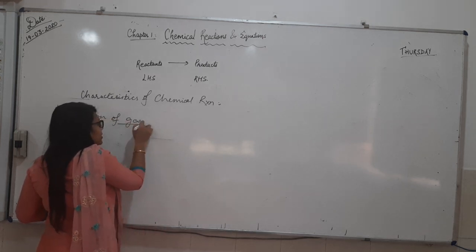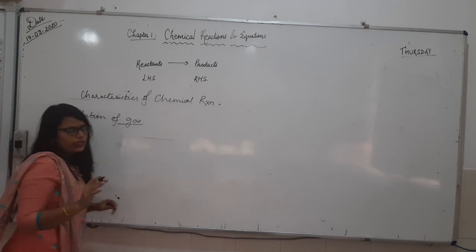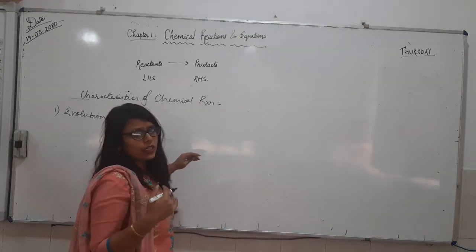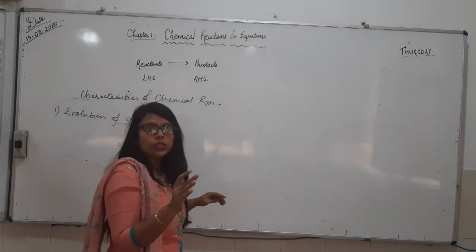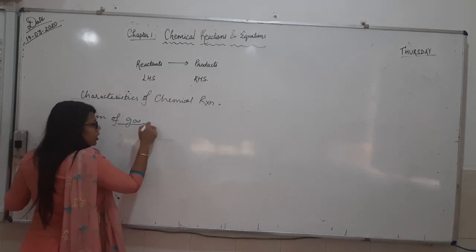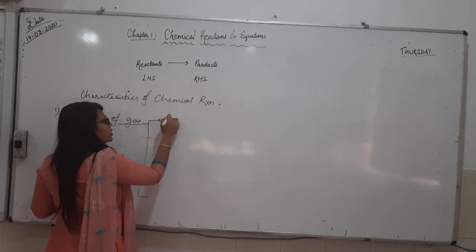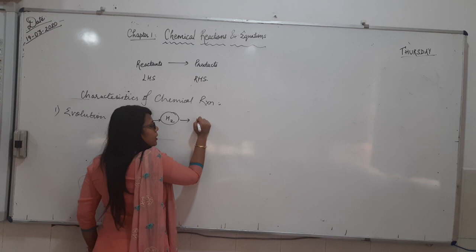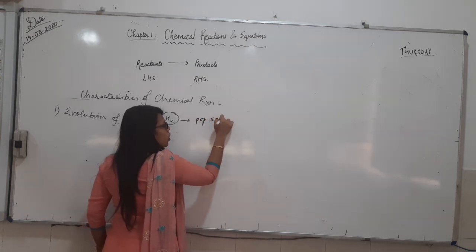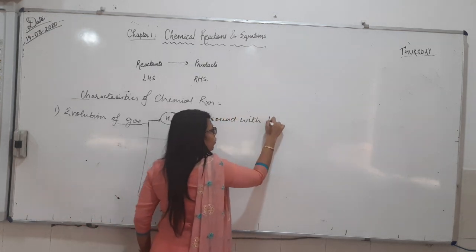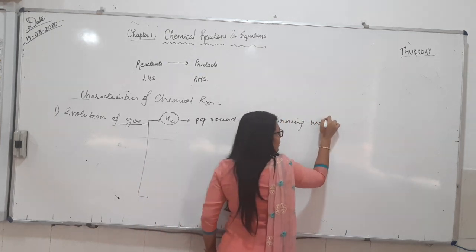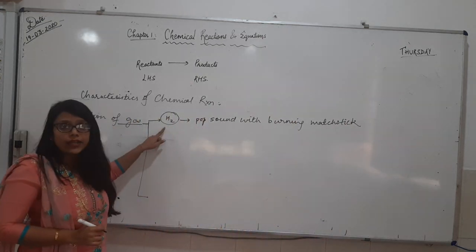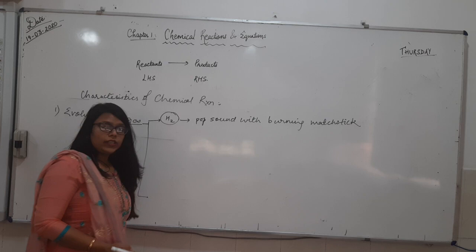In the evolution of gas, various types of gases can evolve. We have to determine which gas is evolving out. The first one is hydrogen gas. When hydrogen gas is evolved and we bring a burning matchstick near it, it produces a pop sound. So it produces a pop sound with a burning matchstick — that is the observation for determining the presence of hydrogen gas.